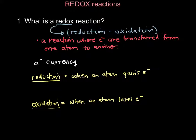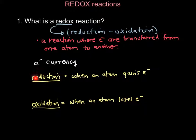The word reduction in oxidation-reduction refers to when an atom gains electrons. So during the course of the reaction, the atom that gains electrons is the one that's been reduced. Oxidation is when an atom loses electrons. The element getting reduced only gains electrons from the element that has been oxidized. So essentially, the element that gets oxidized is losing its electrons to the element that gets reduced.